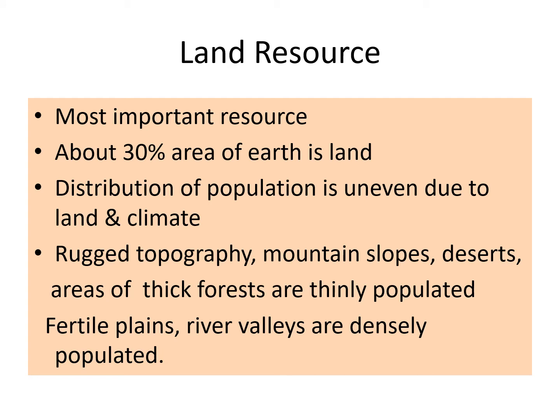Broadly, earth can be divided into two parts, that is land and water. Nearly 30% area of earth is land. Distribution of population is highly uneven due to land and climate. Rugged topography, mountain slopes, deserts, areas of thick forests are thinly populated and support less number of people. On the other hand, fertile plains and river valleys are thickly populated.